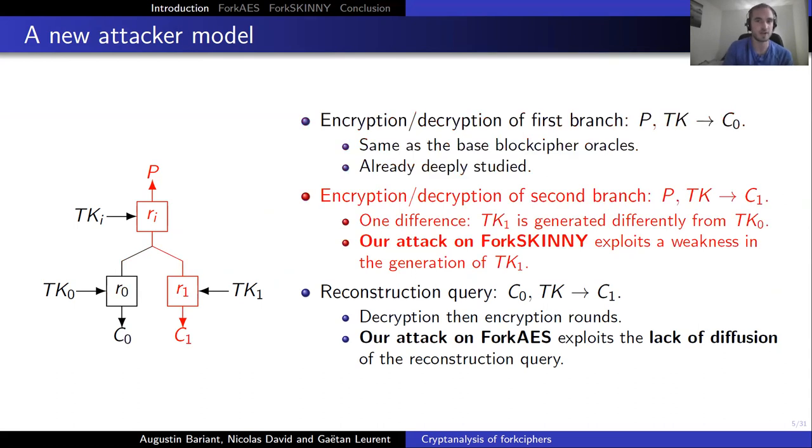The second oracle is the encryption and decryption of the second branch. It differs from the first branch because TK1 is different from TK0. Actually TK1 can be poorly generated and our attack on ForkSkinny exploits a weakness in the generation of TK1.